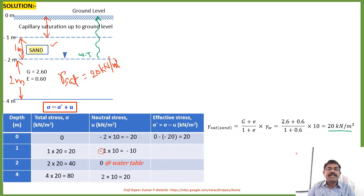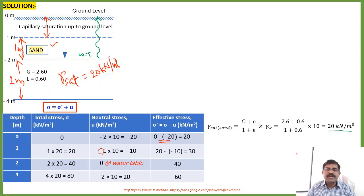We can calculate the effective stress as sigma minus u. At the ground level: 0 − (−20) = 20 kN/m². At 1-meter depth: 20 − (−10) = 30 kN/m². At 4-meter depth: 80 − 20 = 60 kN/m². These are the calculations for total, neutral, and effective stress.